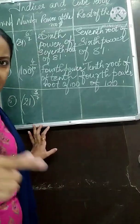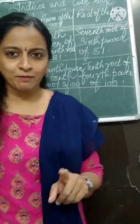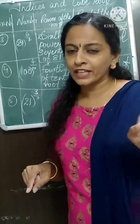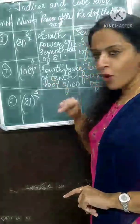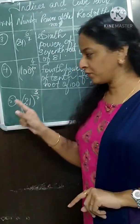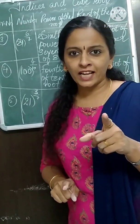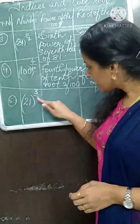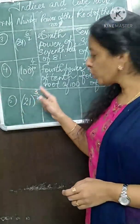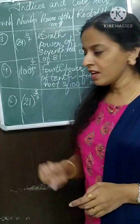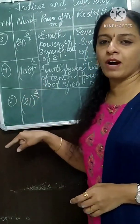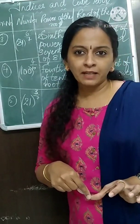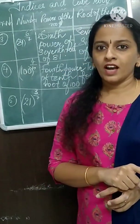Now the last one for this set: 21 raised to 3 upon 7. Starting with power — cube of 7th root of 21, because for 3 we don't write 'par', we write 'cube'. Starting with root: 7th root of cube of 21. When you have cube and square, you need not write the word 'par'.